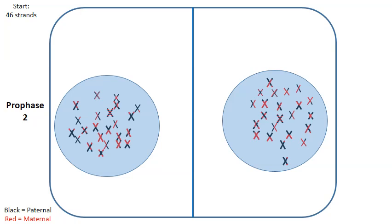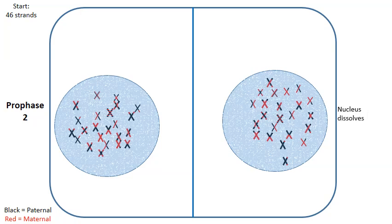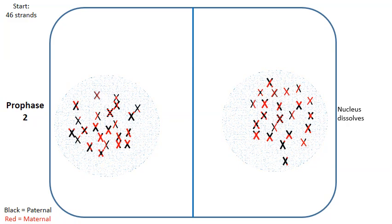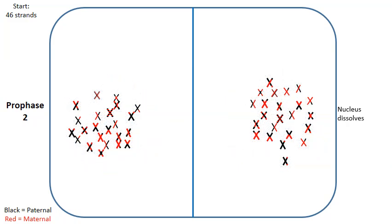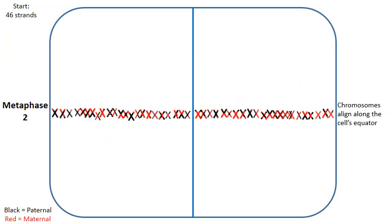And meiosis number two begins with prophase number two. So if the nucleus reformed, then it will simply just re-dissolve. And as we move into metaphase number two, the chromosomes are once again going to be aligned along the equator or the middle line of the cell.